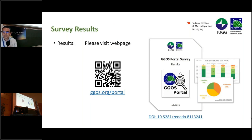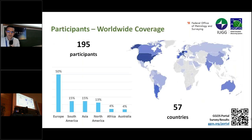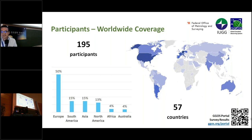Lena also analyzed this survey, and we put all the outcomes into one document, which is available via this DOI and also accessible through the JIGOS.org portal website. In total, participants came from 57 countries, with 195 participants overall.